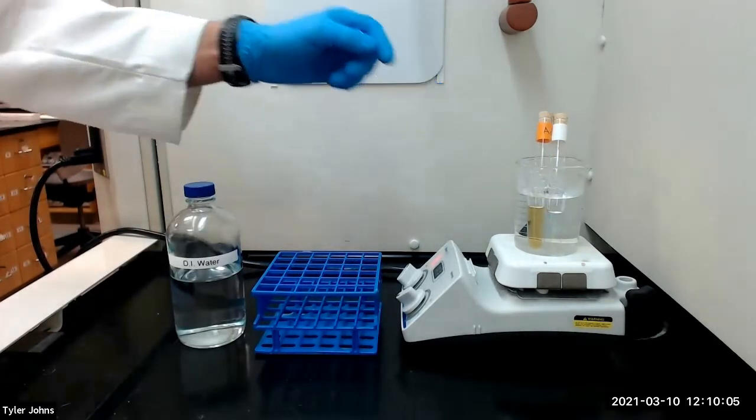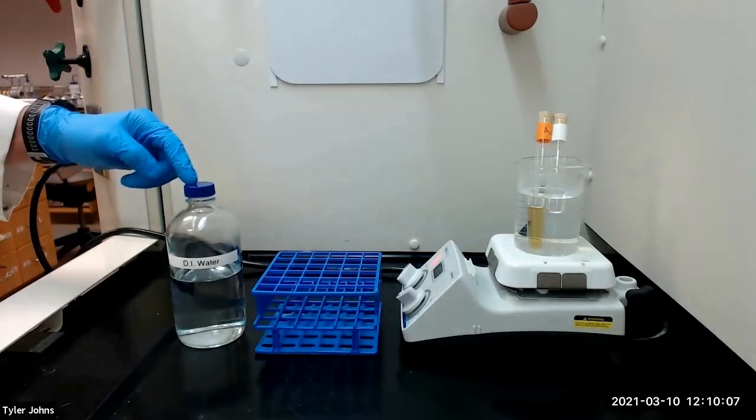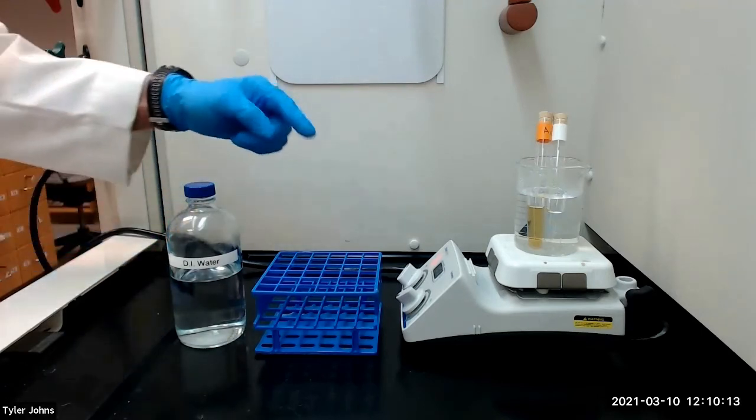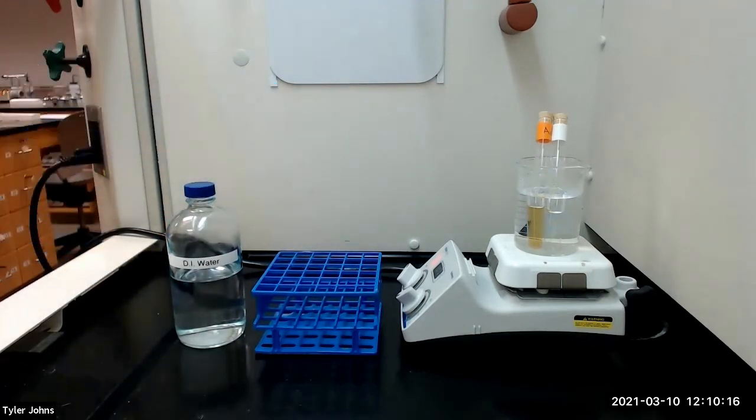After 5 minutes, we will next fill the test tubes with deionized water to within 2 centimeters of the top. We will then cork the test tubes, shake them vigorously, and allow the tubes to stand for 15 minutes at room temperature.